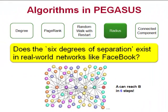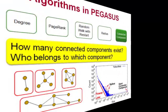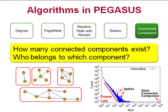Six degrees of separation is a well-known phenomenon in social networks, meaning that any two people in the world are only six steps apart, on average. The Radius algorithm computes the radii of nodes, which is the average distance to all other nodes in the graph, and can thus verify the six degrees of separation phenomenon. It also finds nodes with the smallest radii, or nodes belonging to long chains that are barely connected to the core part of the network. The connected component algorithm finds all the components and their sizes in a graph, and shows their distribution in a plot, which can help us find outliers and anomalies.